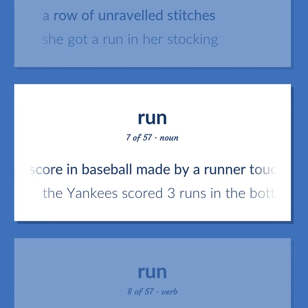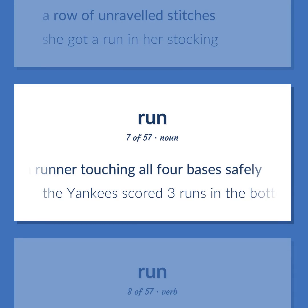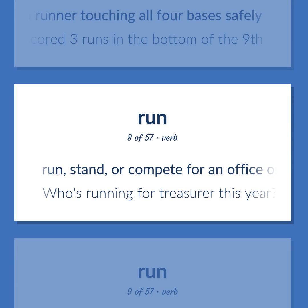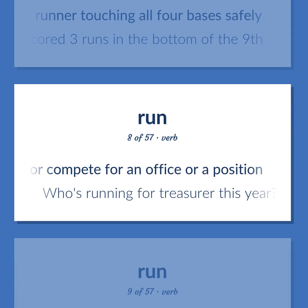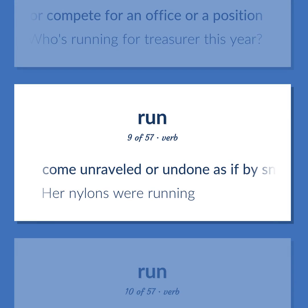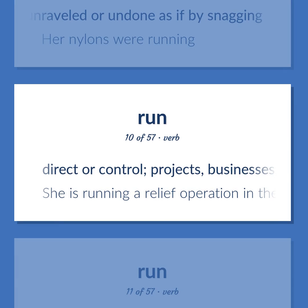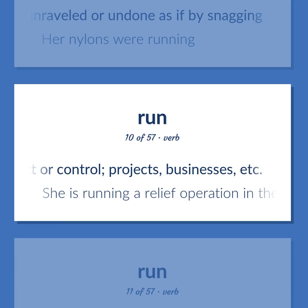A score in baseball made by a runner touching all four bases safely. The Yankees scored three runs in the bottom of the ninth. Run, stand, or compete for an office or a position — who's running for treasurer this year? Come unraveled or undone as if by snagging — her nylons were running. Direct or control projects, businesses, etc. She is running a relief operation in the Sudan.